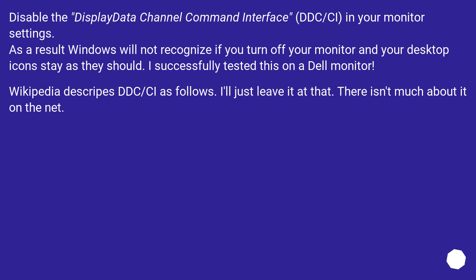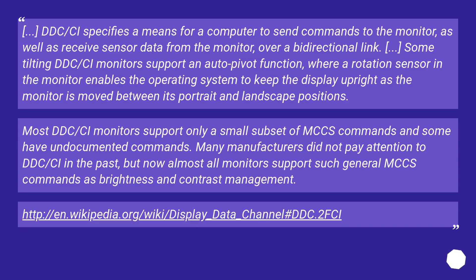Wikipedia describes DDC/CI as follows — DDC/CI specifies a means for a computer to send commands to the monitor as well as receive sensor data from the monitor over a bi-directional link. Some DDC/CI monitors support an auto pivot function where a rotation sensor enables the OS to keep the display upright as the monitor is moved between portrait and landscape positions. Most DDC/CI monitors support only a small subset of MCCS commands, and some have undocumented commands. Many manufacturers did not pay attention to DDC/CI in the past, but now almost all monitors support general MCCS commands such as brightness and contrast management.